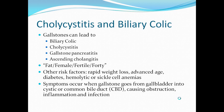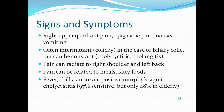Your typical biliary colic symptoms occur when the gallstone goes from the gallbladder into the cystic or common bile duct, causing obstruction, inflammation, and sometimes infection. Symptoms include right upper quadrant pain, epigastric pain, nausea, and vomiting. It is often intermittent in the case of biliary colic, but can be constant in the case of cholecystitis or cholangitis. The pain can radiate to the right shoulder and left back in some classical presentations, and can be related to meals and fatty foods.